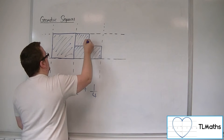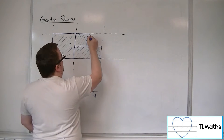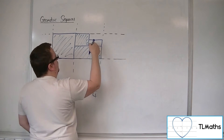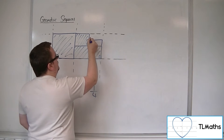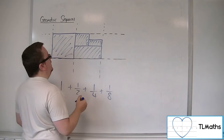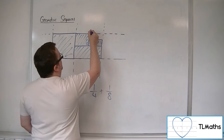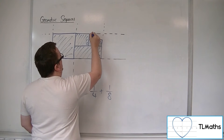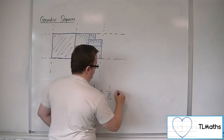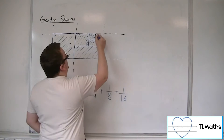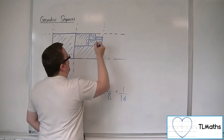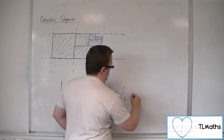Let's shade that in. And then if I halve what's left, that would be an eighth. And then if I halve what's left, that would be a sixteenth. And then halve what's left, I'd have 1 over 32.